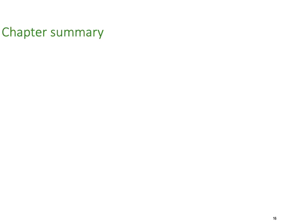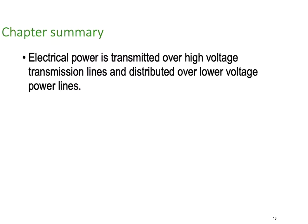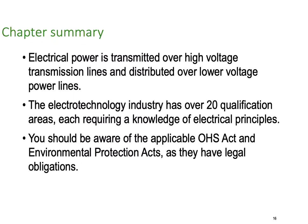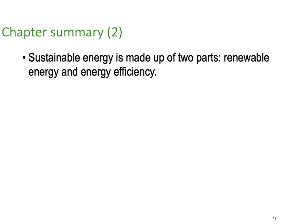We're going to summarize the entire chapter here. Electrical power is transmitted over high voltage transmission lines and distributed over lower voltage power lines. The electrotechnology industry has over 20 qualification areas, each requiring knowledge of electrical principles, whether in electrical, electronics, etc. You should be aware of the applicable WHS Act and Environmental Protection Acts that apply where you work. Sustainable energy is made up of two parts: renewable energy and energy efficiency. A lot of our renewables now come from gas and wind and solar, and efficiency from LED lighting, things like that.